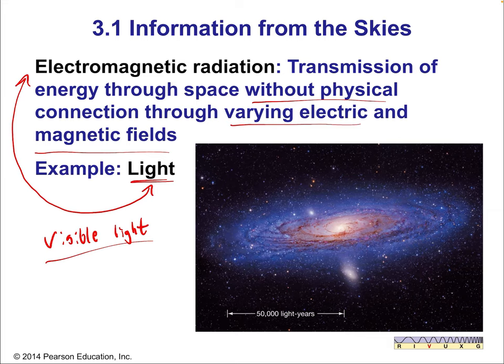Notice it says 'without a physical connection' — that means a vacuum, because that's what space is, a near vacuum. Also notice 'varying electric and magnetic fields.' Light travels very long distances — for example, 50,000 light years, which is the radius of our galaxy. That means light takes 50,000 years to travel that far, considering that light has a speed of 300 million meters per second.